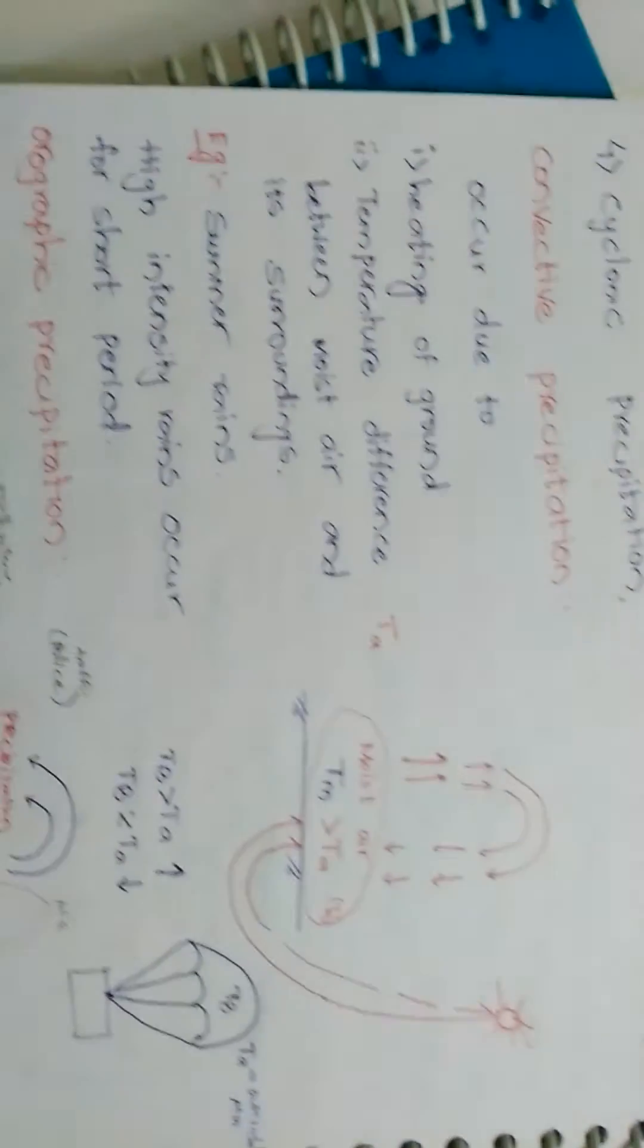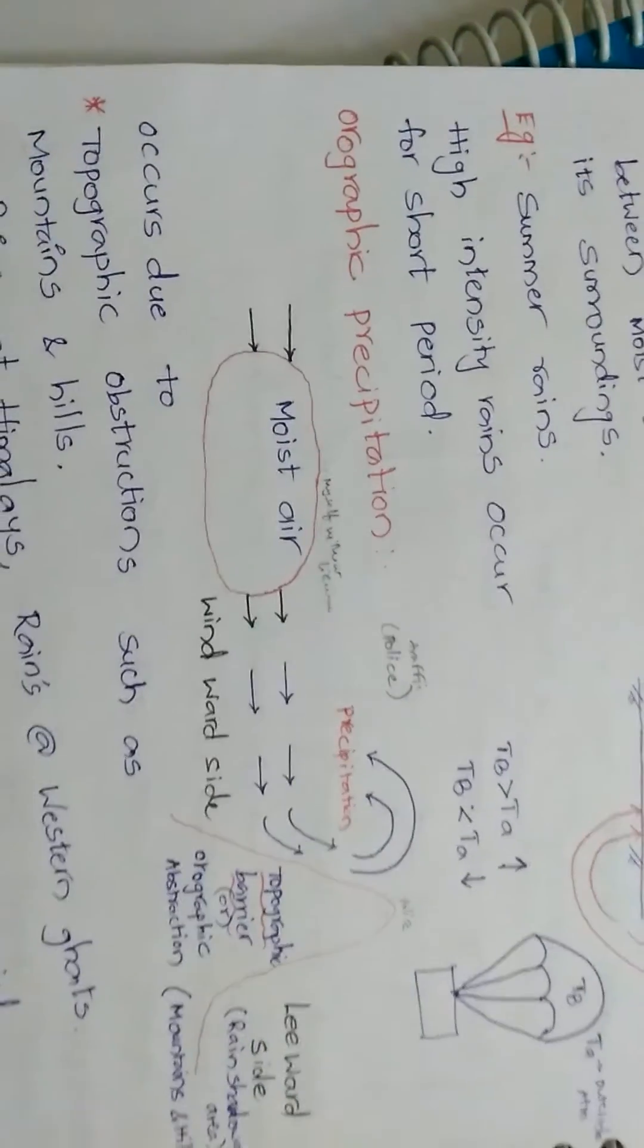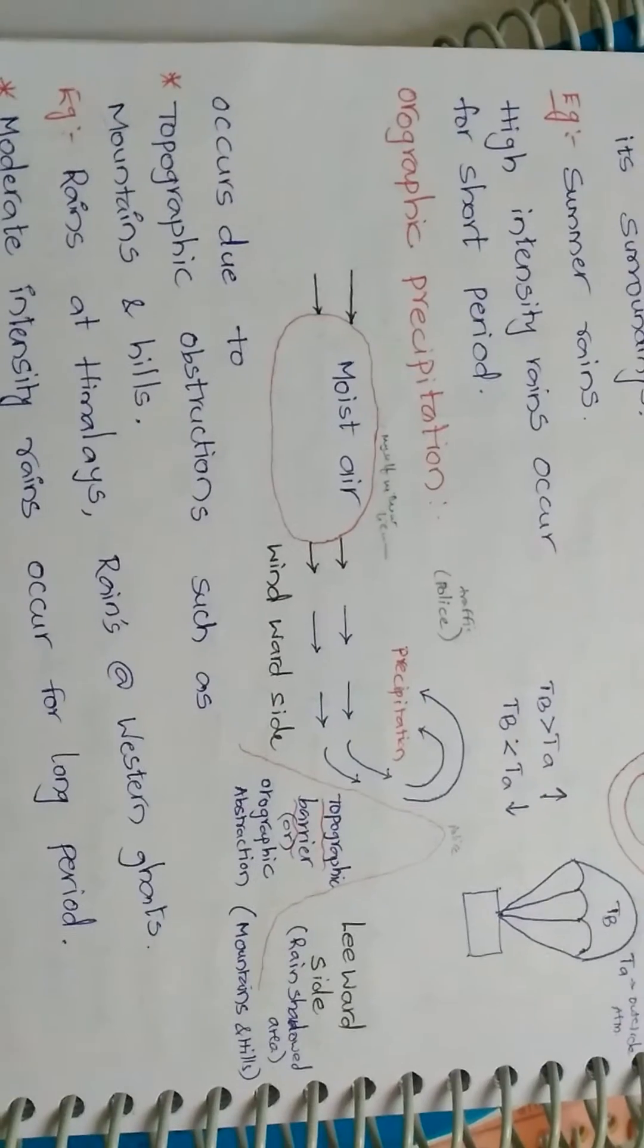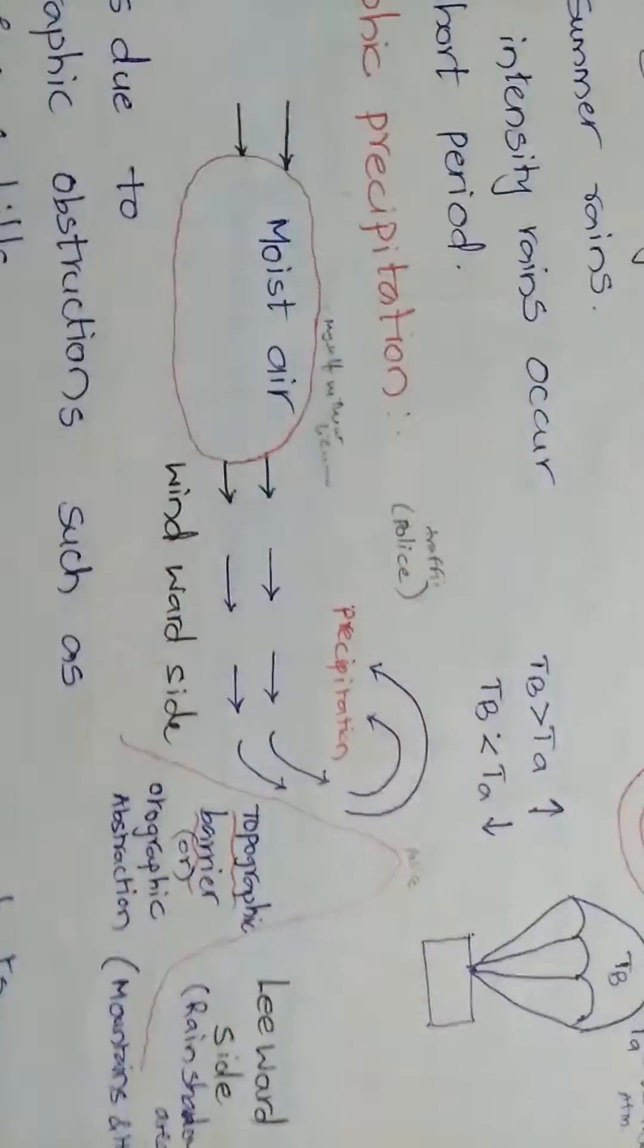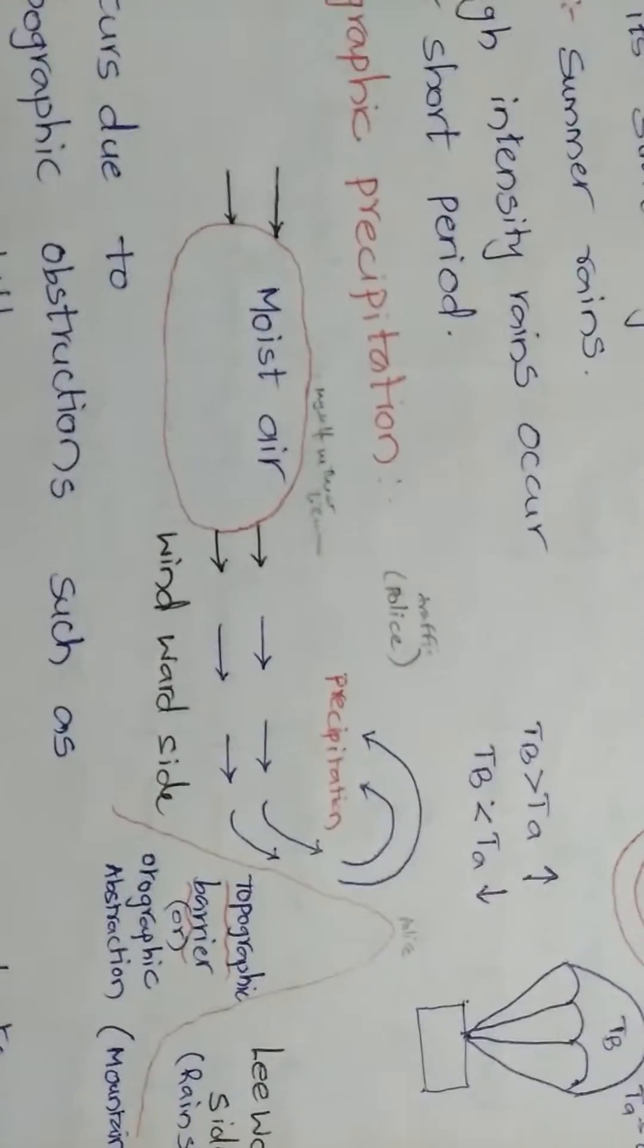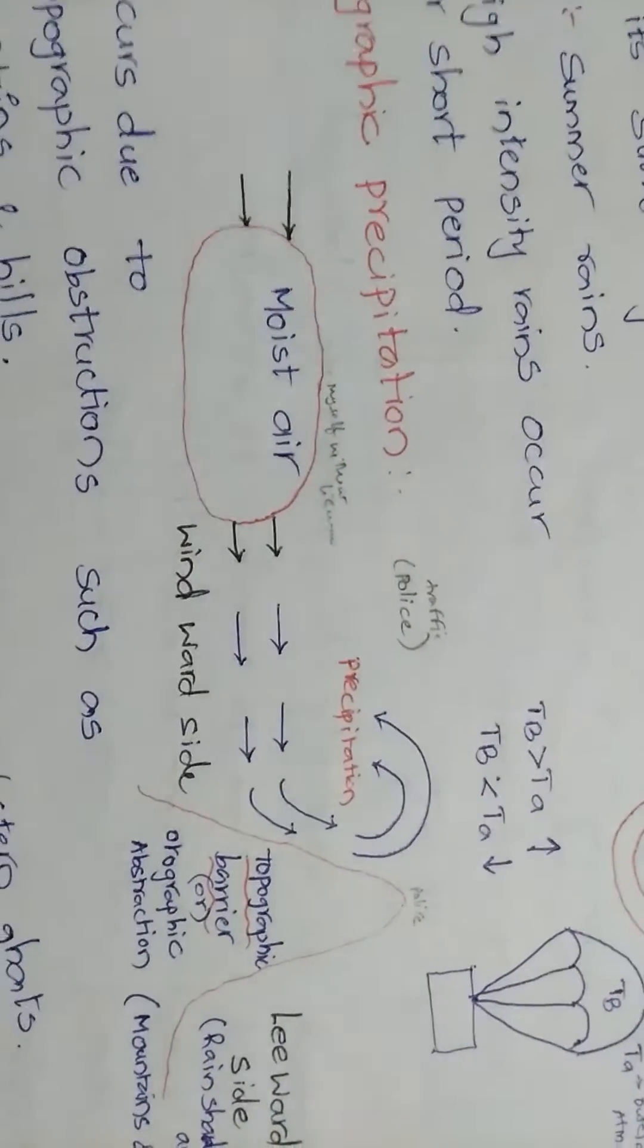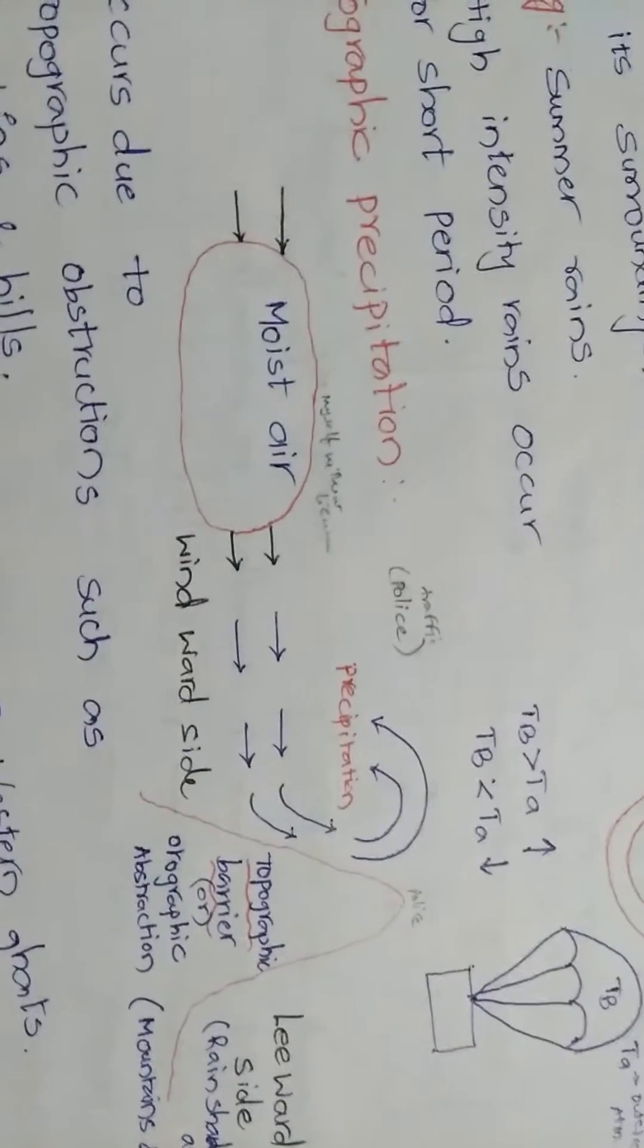Orographic precipitation occurs due to topographic obstructions such as mountains and hills. This rain occurs at the mountain regions. Initially moist air travels through, travels and it heats the obstruction, the topographic barrier or orographic obstruction and it produces the precipitation.